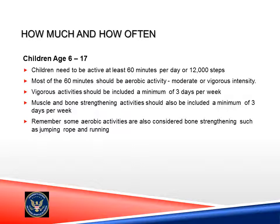So how much and how often should we be physically active? Children ages 6 to 17 need to be active at least 60 minutes per day, or 12,000 steps. Most of the 60 minutes should be aerobic activity at moderate or vigorous intensity. Vigorous activity should be included a minimum of 3 days per week. Muscle and bone strengthening activities should also be included a minimum of 3 days per week. Remember, some aerobic activities are also considered bone strengthening, such as jumping rope and running.